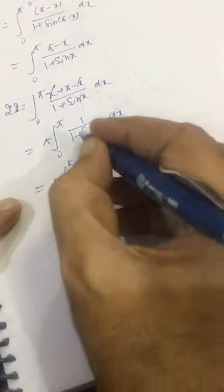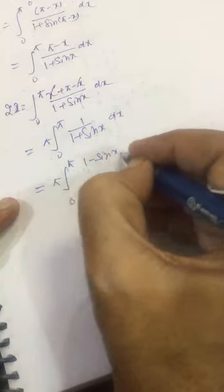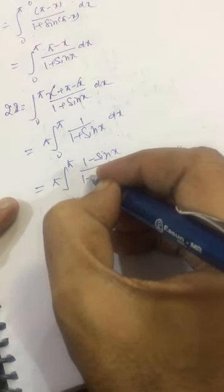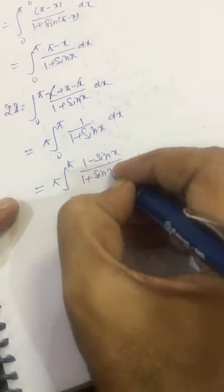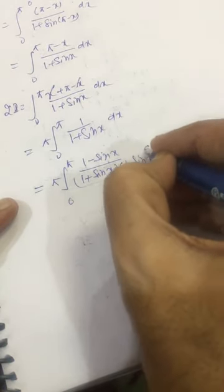We can further proceed by multiplying numerator as well as denominator by 1 minus sin x, so we get pi times integral 0 to pi of (1 minus sin x) divided by (1 plus sin x)(1 minus sin x) dx.